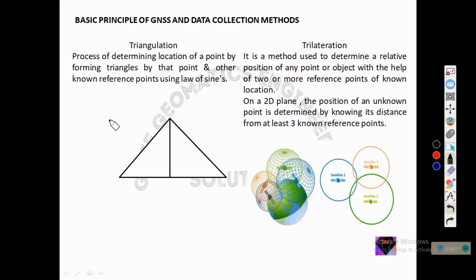Before going into that topic, we need to understand triangulation and trilateration. Triangulation is a process of determining the location of a point by forming triangles using that point and other known reference points, using the law of sines. Here we can see a triangle, which I am naming triangle ABC.